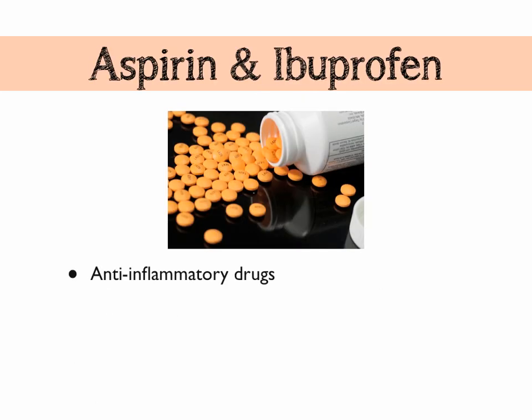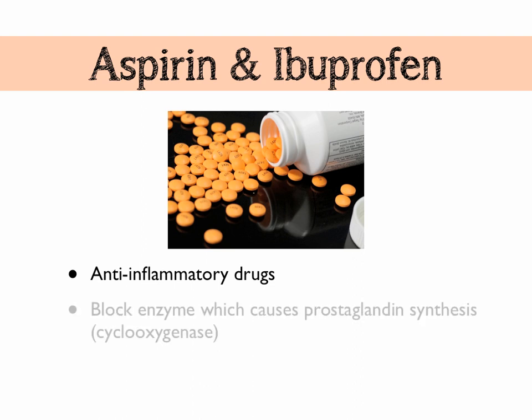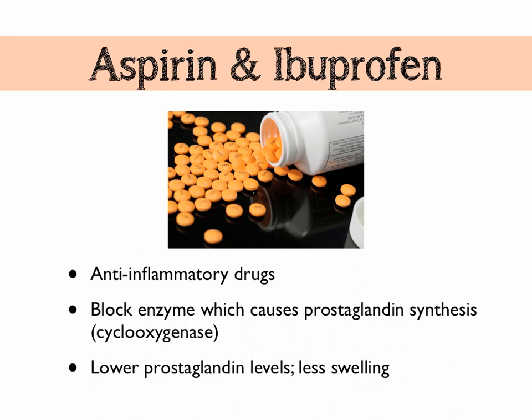Aspirin and ibuprofen are common anti-inflammatory drugs that reduce the amount of prostaglandins in the body. They do this by blocking the enzyme cyclooxygenase, which promotes prostaglandin synthesis. With less cyclooxygenase activity, there is less prostaglandin synthesis, meaning fewer prostaglandins and therefore less swelling. Because some prostaglandins increase blood pressure, blocking cyclooxygenase with aspirin also reduces prostaglandin levels and therefore lowers blood pressure.